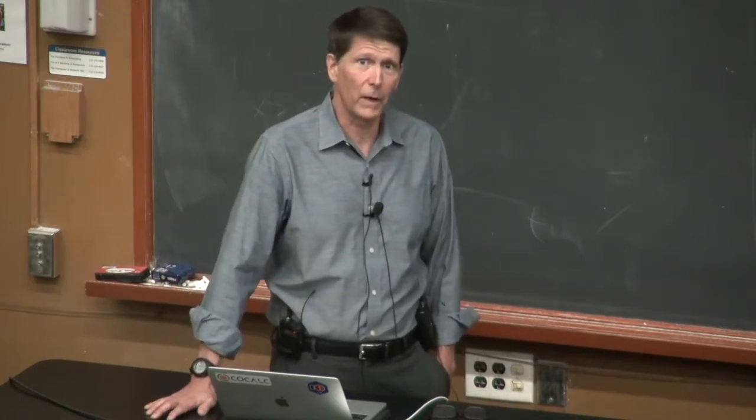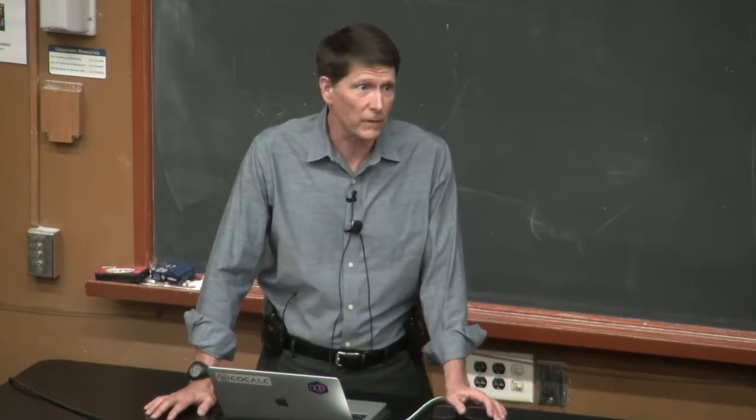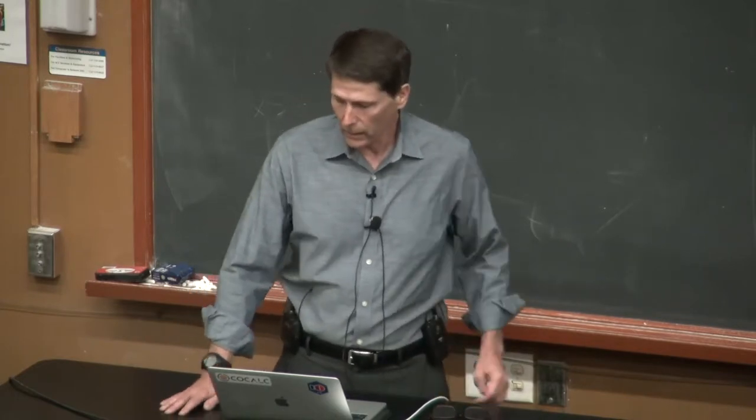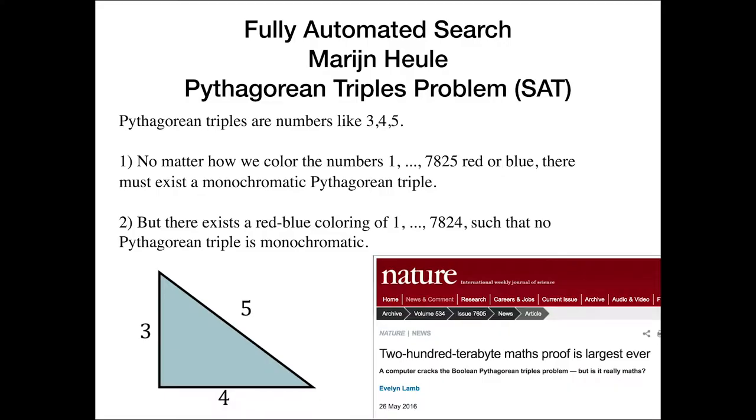Marijn Heule has had some rather spectacular successes in solving SAT problems. These are satisfiability problems for propositional logic. So one of them that he solved is the Pythagorean triples problem. And this problem goes back to Ron Graham. What you do is you take the numbers one up through N and you color each number either red or blue. And then if you have a Pythagorean triple such as three, four, and five numbers, three squared plus four squared equals five squared, there's a Pythagorean triple, you ask whether that triple is monochromatic or not.